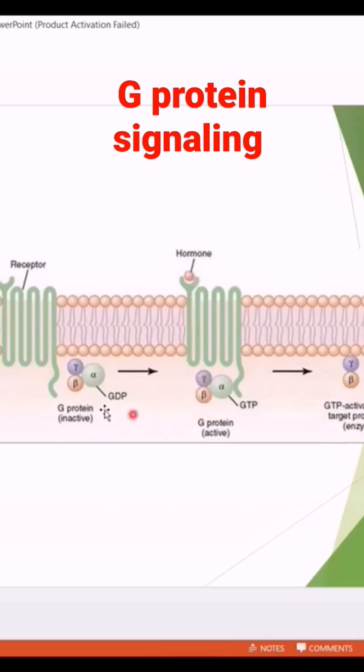This G protein is converted from the inactive form into the active form. It binds with the intracellular part of the receptor. Then, after the receptor becomes activated, there may be opening or closing.